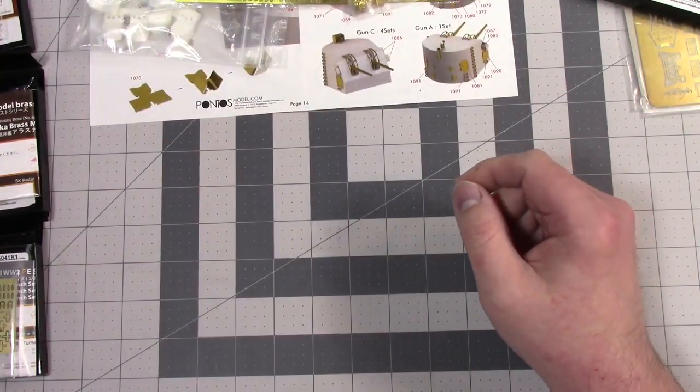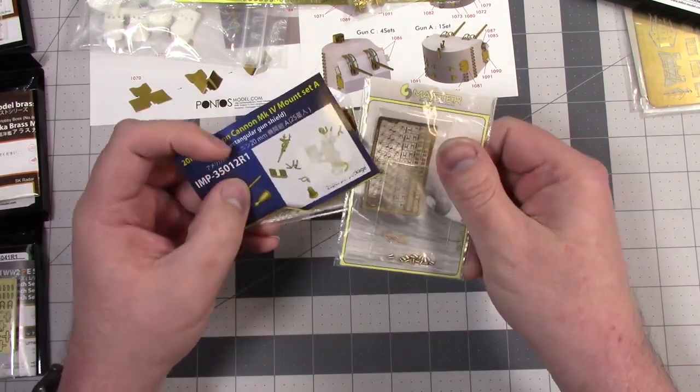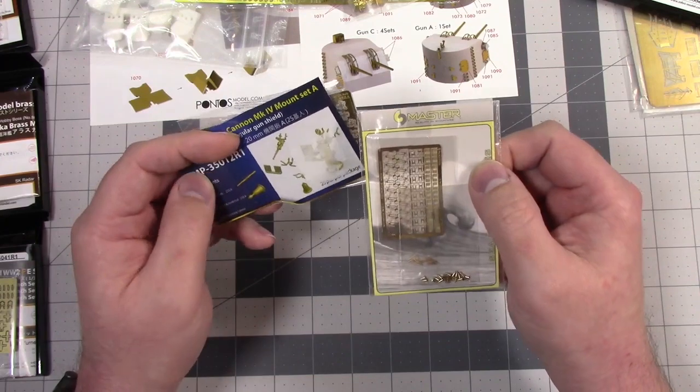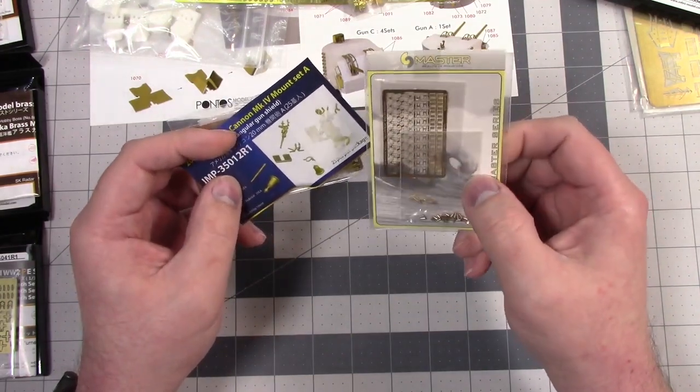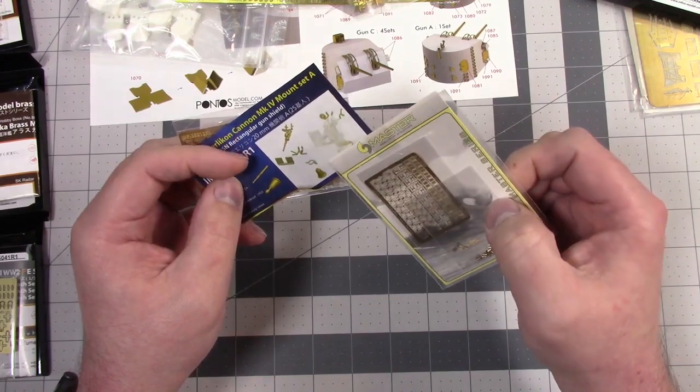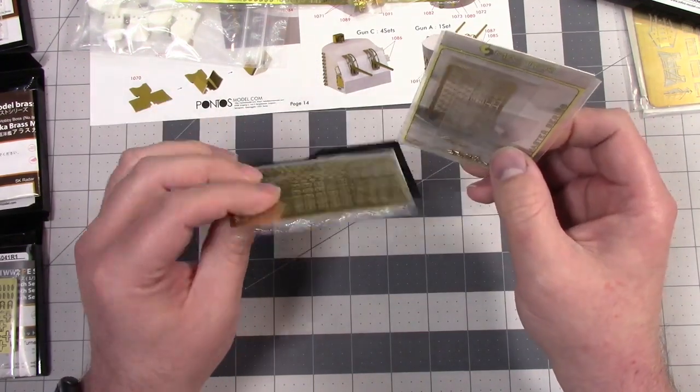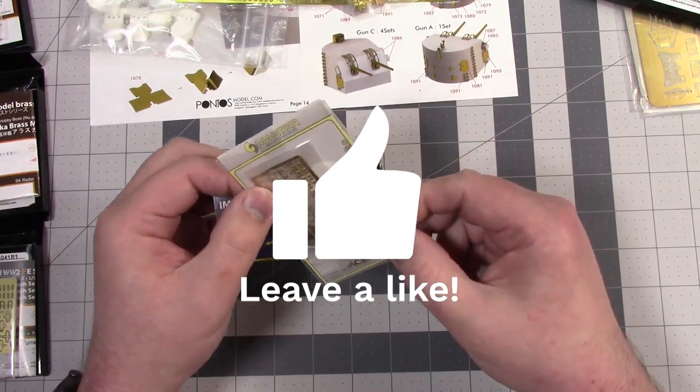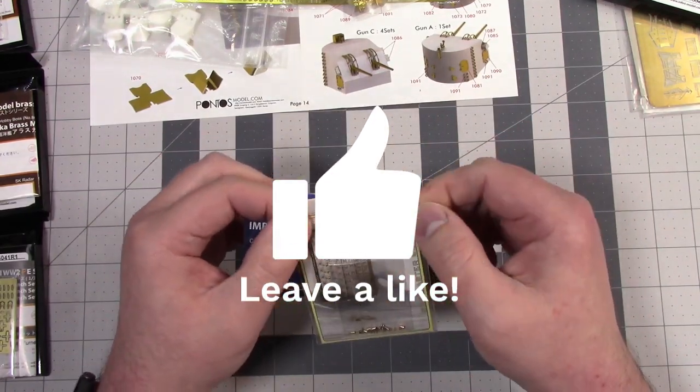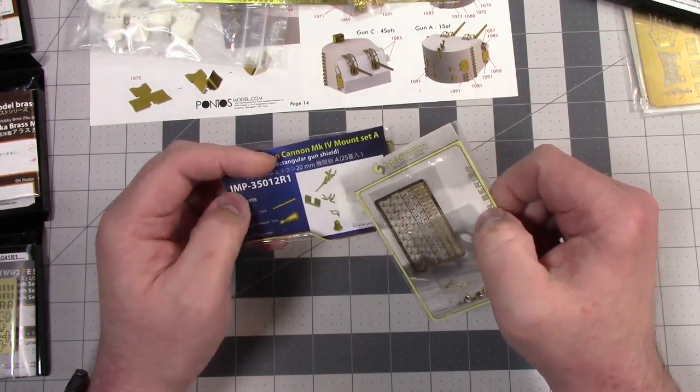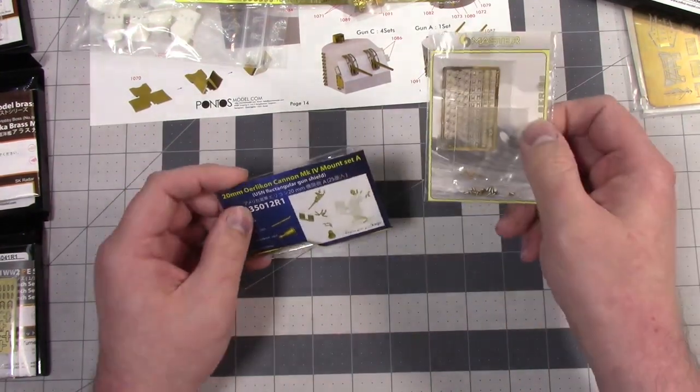And then like I said, we have the two different Oerlikons here. One from Master Model. They both have full brass round barrels and stands, which I think is a plus for these. I don't like the folded photo etched look. If you've seen my Instagram, I posted some pictures of a folded Eduard Oerlikon. And it looks all right, but I think these multi-piece with the barrels will look nicer on the Alaska.